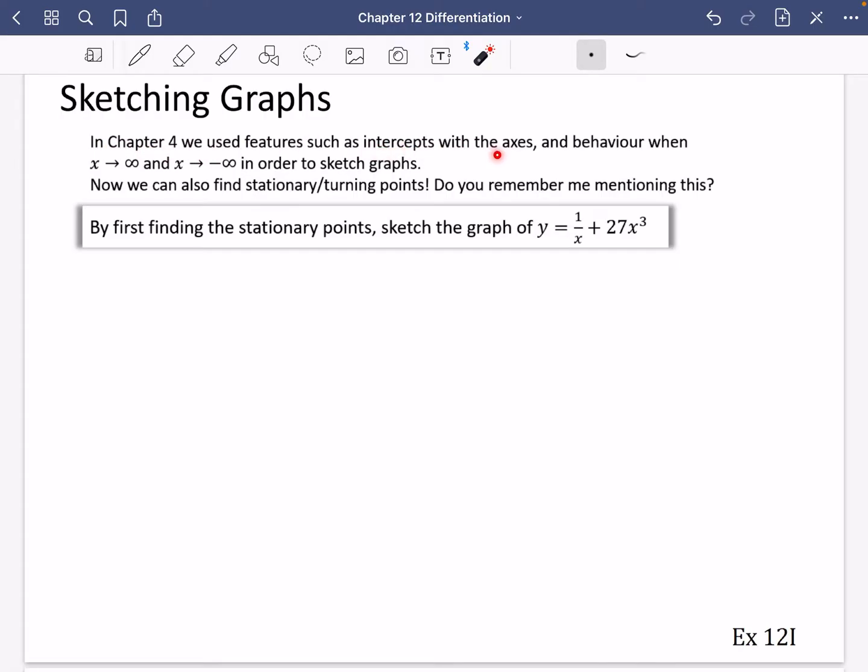So it says in chapter four, we used features such as intercepts with the axes and behavior when x became large or x became very small in order to sketch graphs. Now we can also find stationary or turning points. Do you remember mentioning this when we were doing the graphs back in chapter four? So this one says by first finding the stationary points, sketch the graph of y equals 1/x plus 27x³.